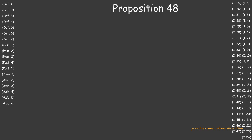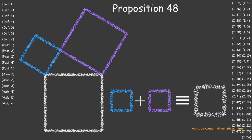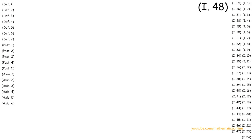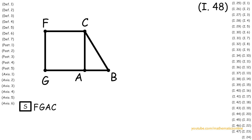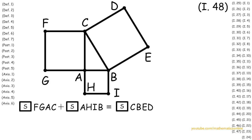In Proposition 48, we prove that given any triangle, if the sum of the two smaller squares are congruent to the larger square, then the angle opposite the larger square must be a right angle. To begin, we are given triangle ABC, and we are also given that square FGAC plus square AHIB is congruent to square CBED. What we want to prove in the end is that angle BAC is congruent to a right angle.